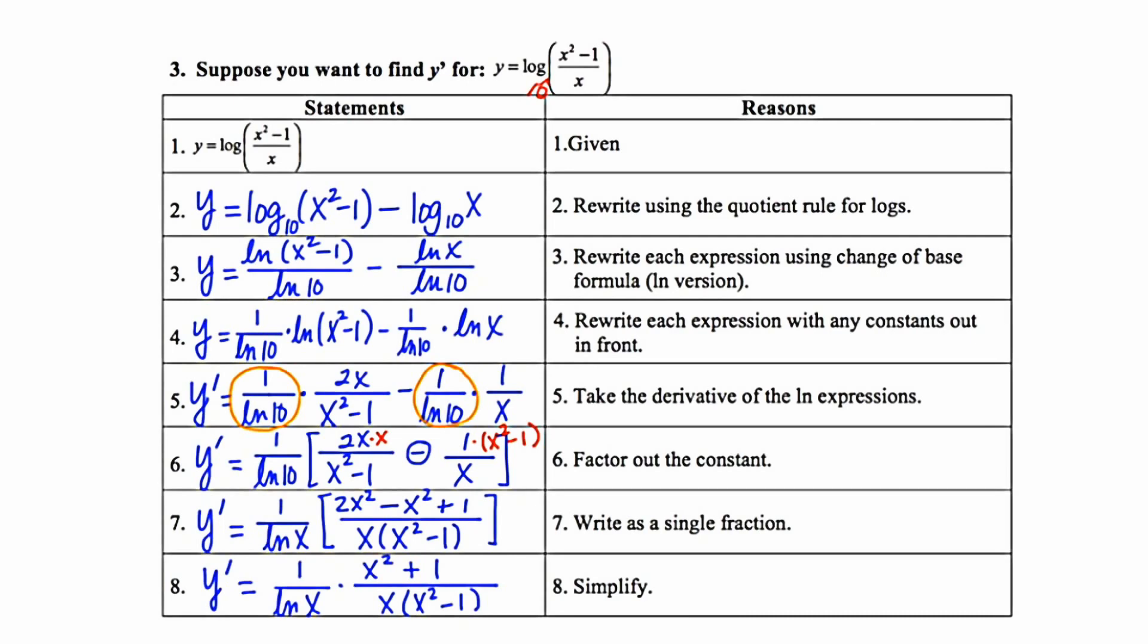So there you have it. Here are two examples of taking the derivative of log expressions with bases other than e. It's all about using the change of base formula and rewriting these as the ratio of natural logs.